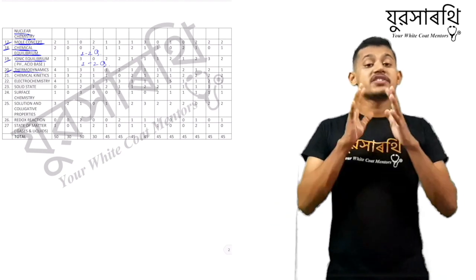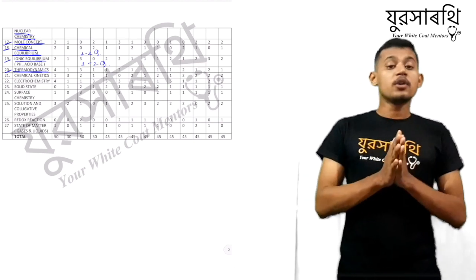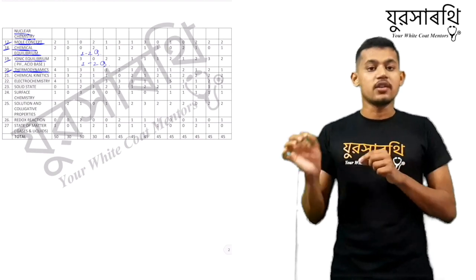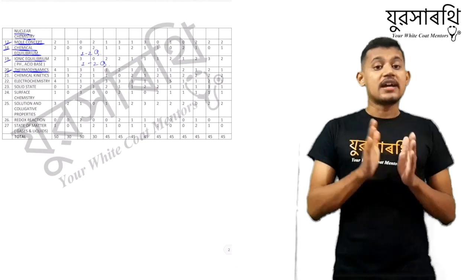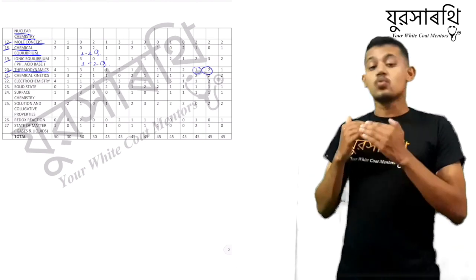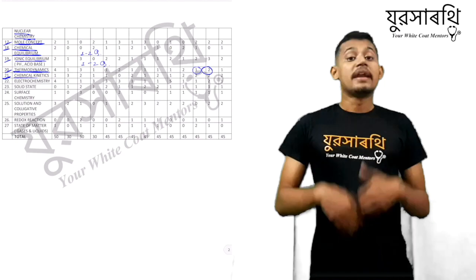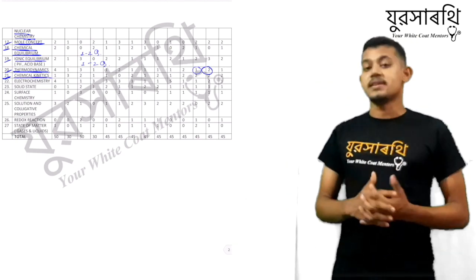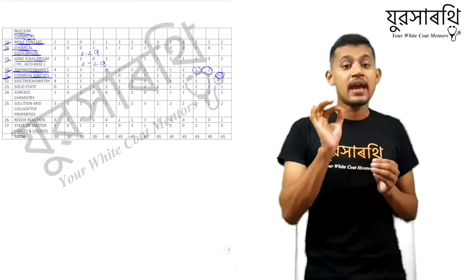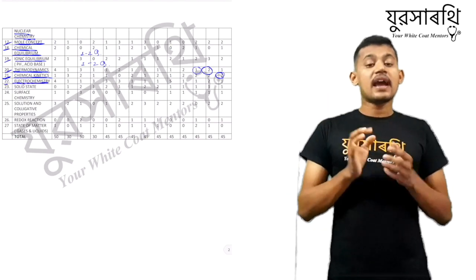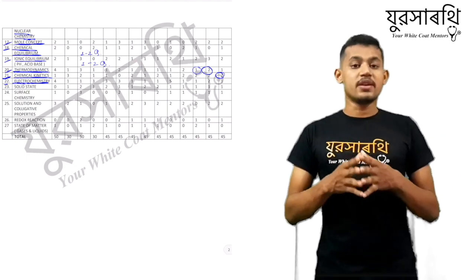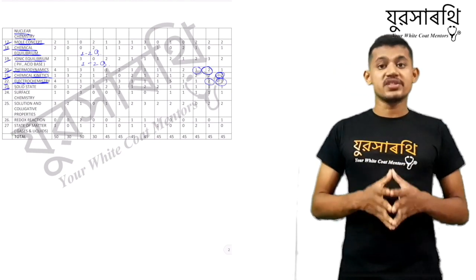After ionic equilibrium, we have thermodynamics — a class 11 topic. People find it tough because there are many conversions of temperature and all. But once you know the conversion system and the concept, it becomes very easy. They ask one to two questions every year from thermodynamics. Next, chemical kinetics — one to two questions every year. After chemical kinetics, we have electrochemistry, which is concept-based and mostly numerical; they ask one to two questions every year.